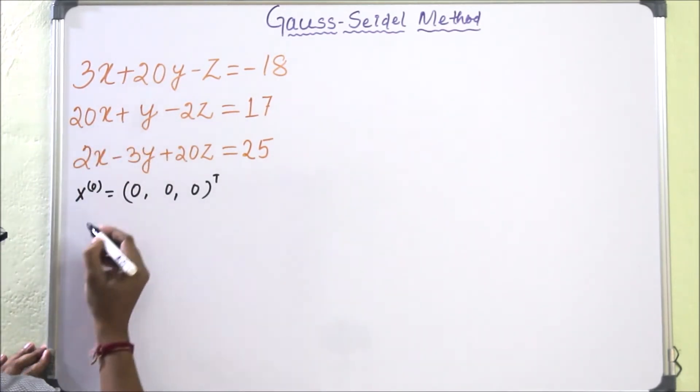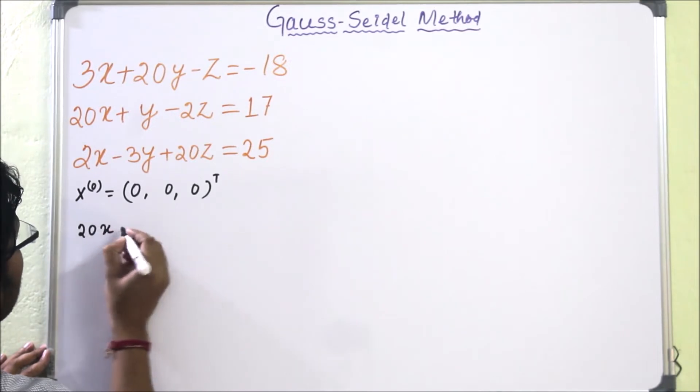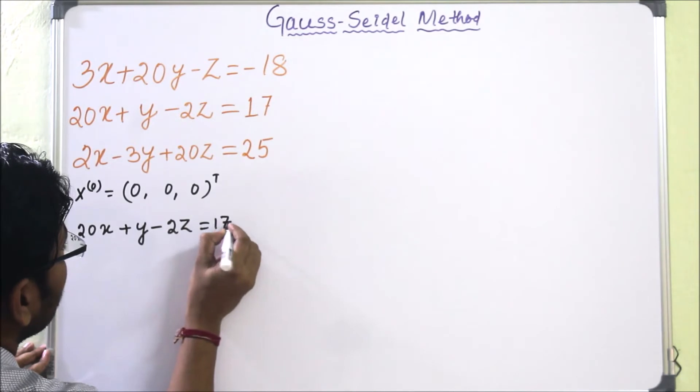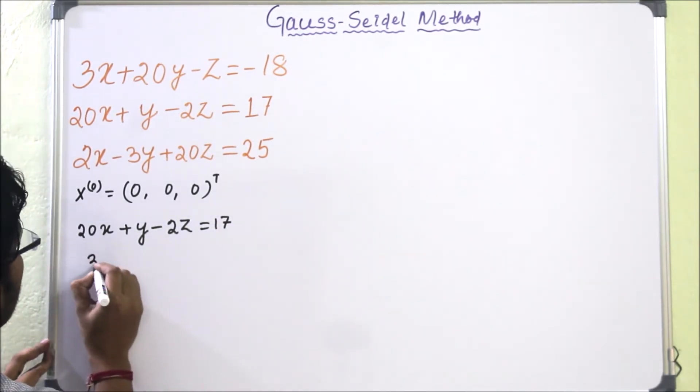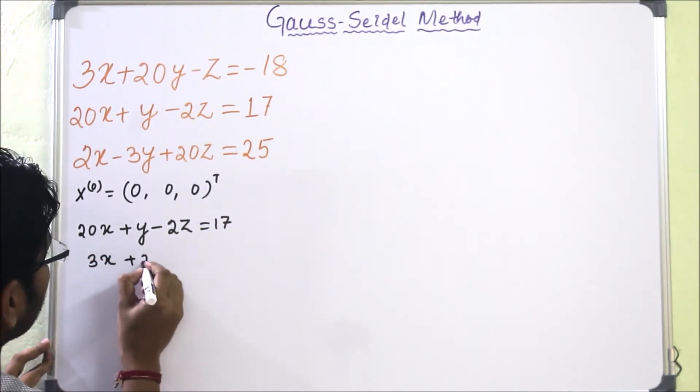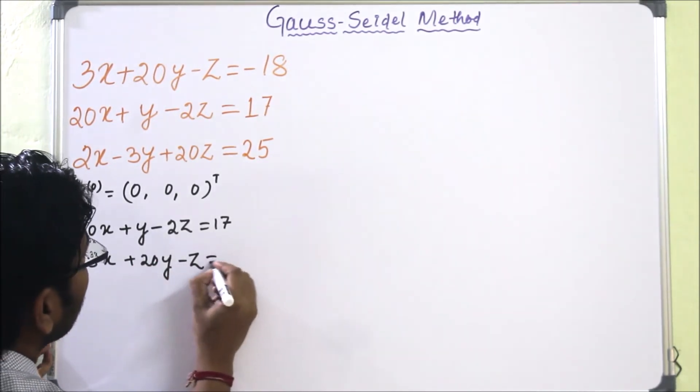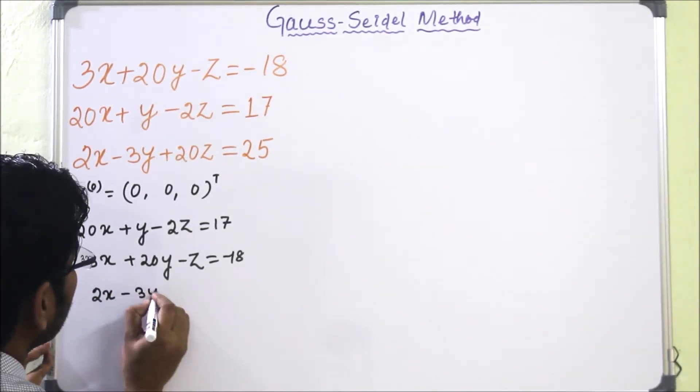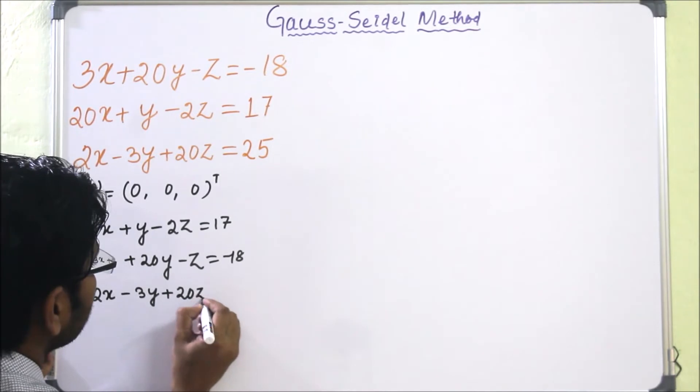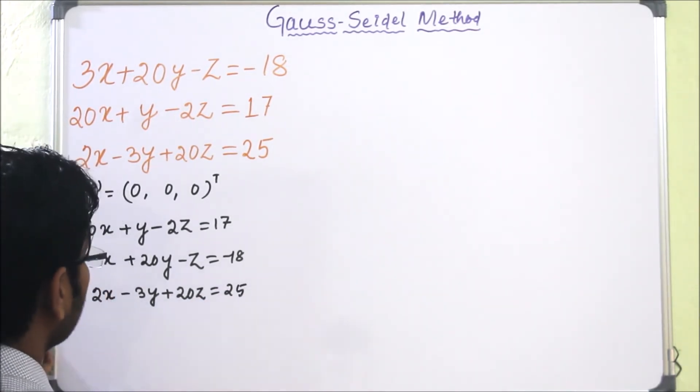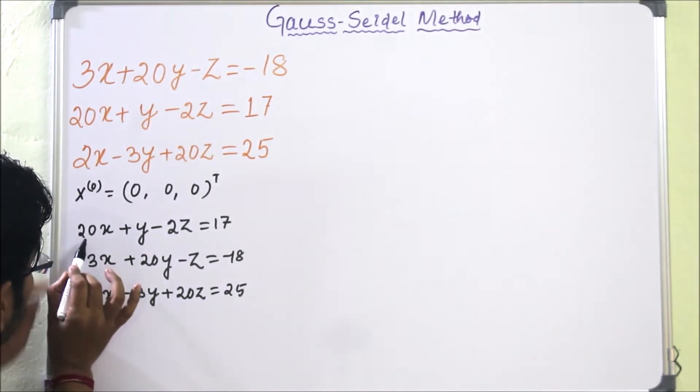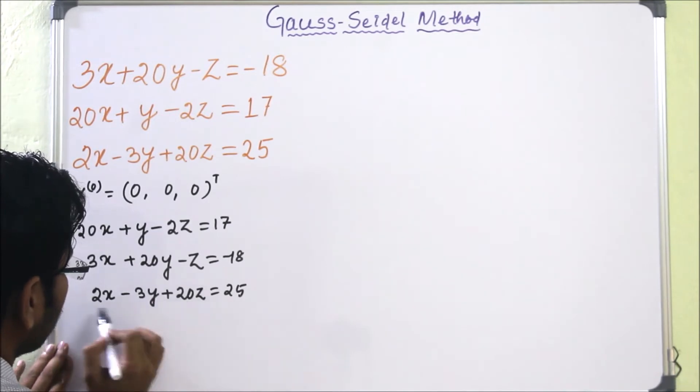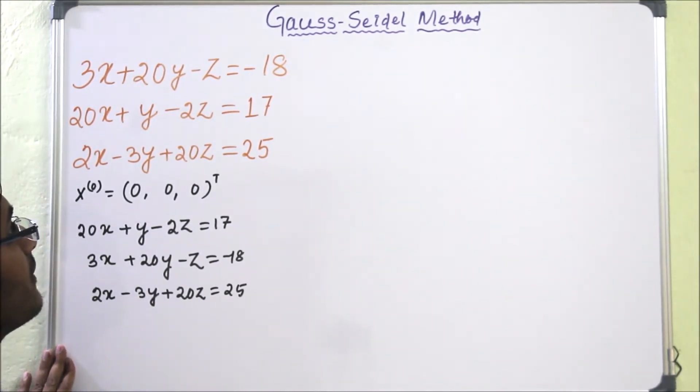So to start this problem, we have to write equation 2 as equation 1. So it will be 20x plus y minus 2z equal to 17 is the first equation. Then 3x plus 20y minus z equal to minus 18, and 2x minus 3y plus 20z equal to 25. Now we can see that 20 is greater than the sum of other coefficients in each row. So now we can apply Gauss-Seidel method.